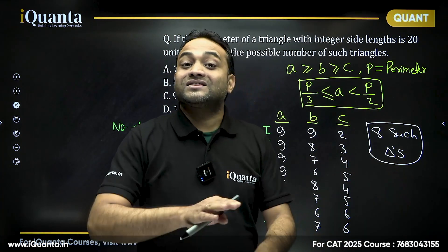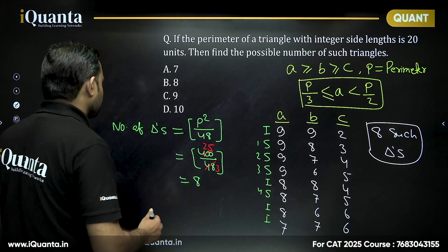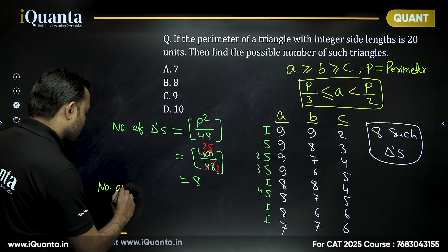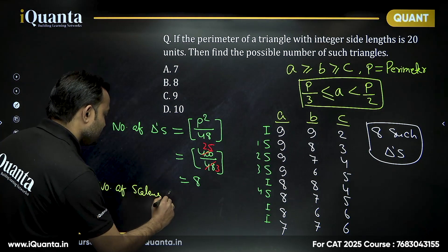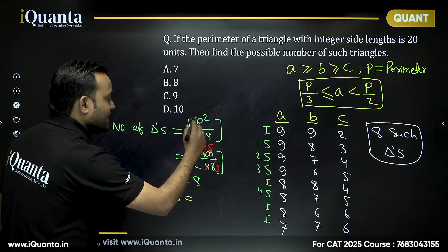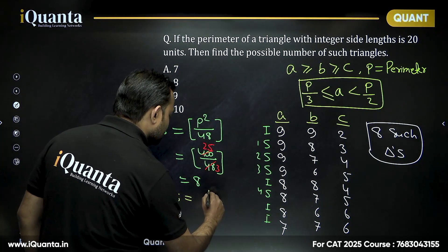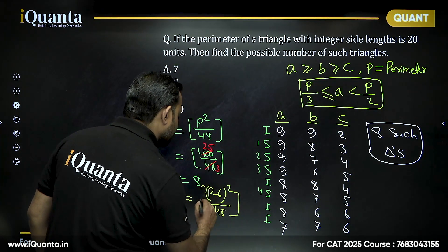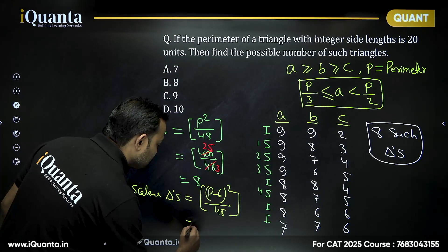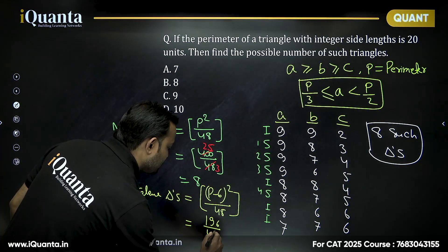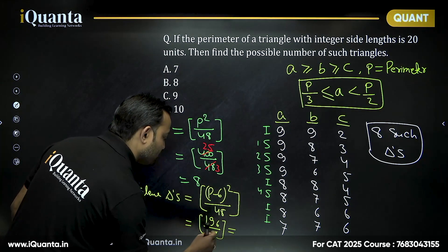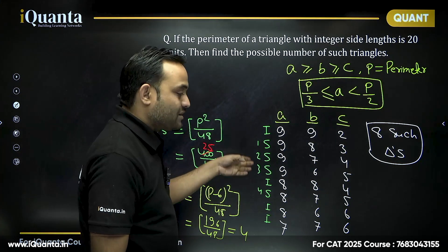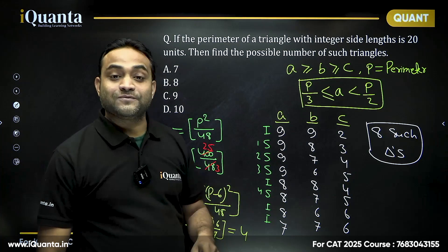For the number of scalene triangles when P is even, the formula is the nearest integer of (P − 6)² / 48. For P = 20: (14)² / 48 = 196 / 48 ≈ 4.08, so the nearest integer is 4 scalene triangles.